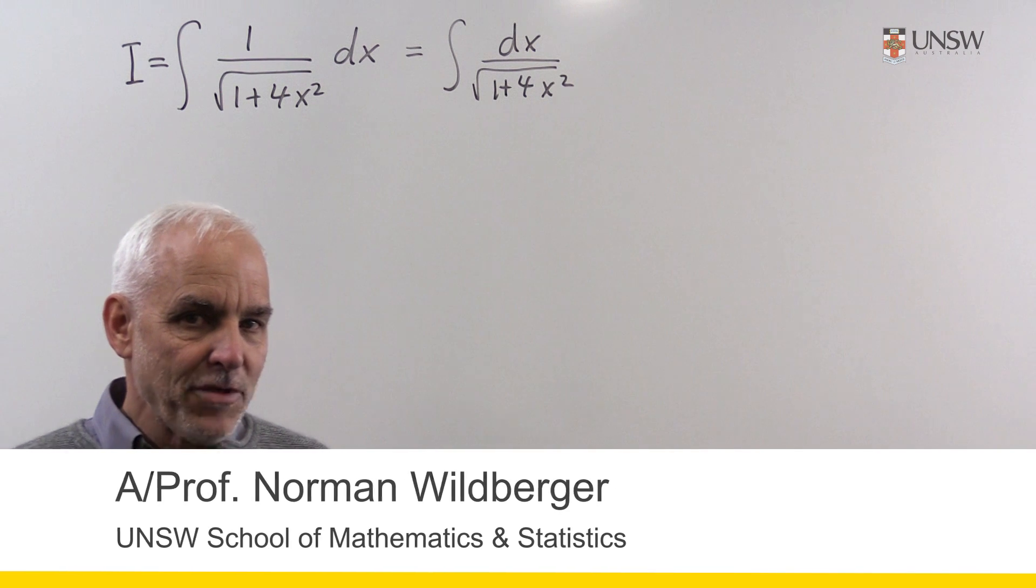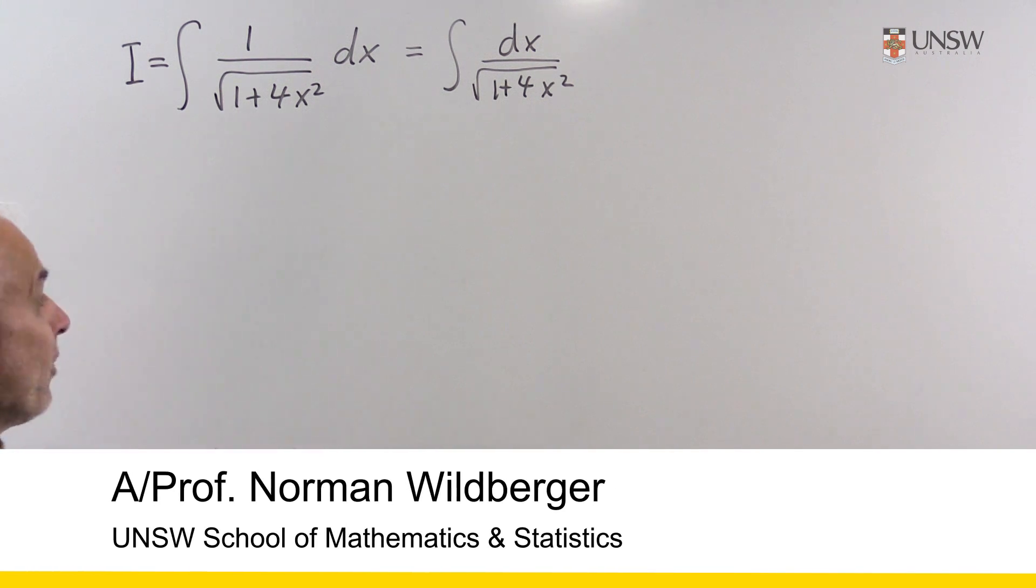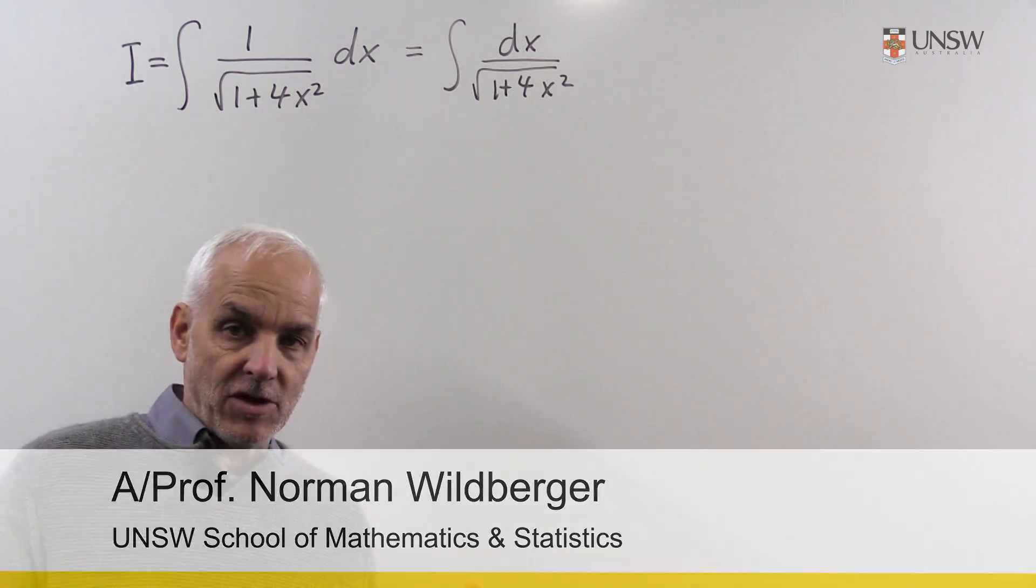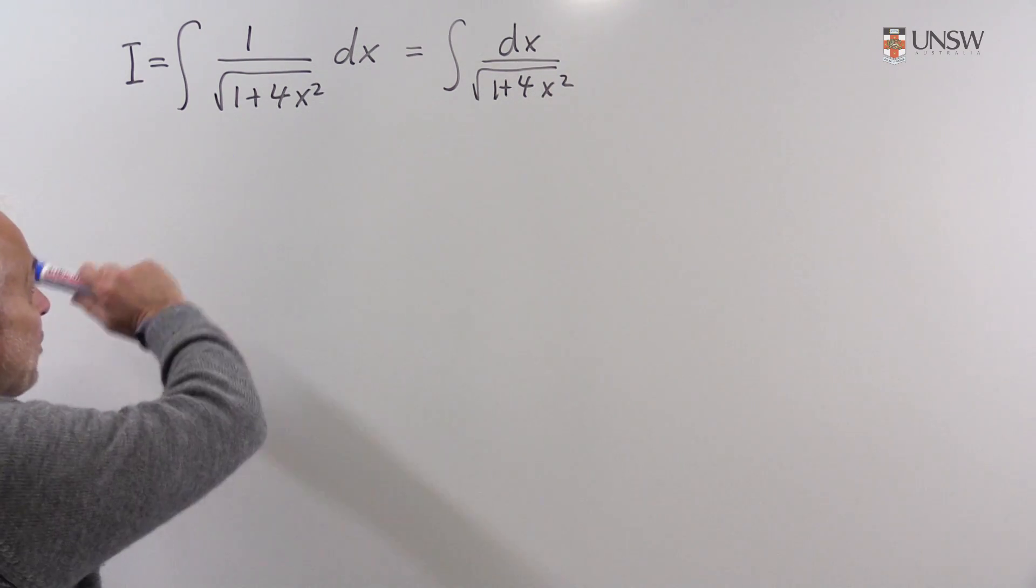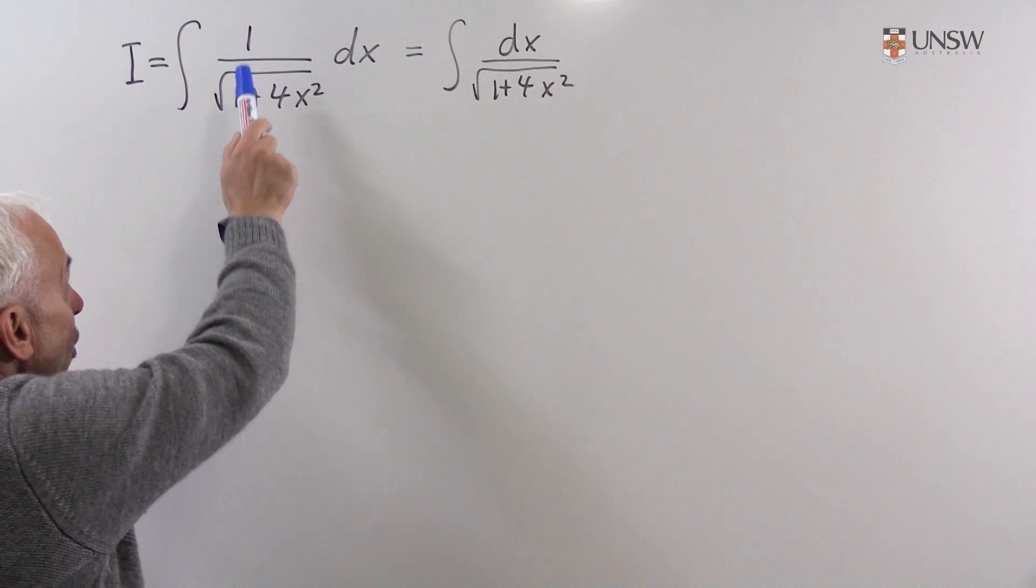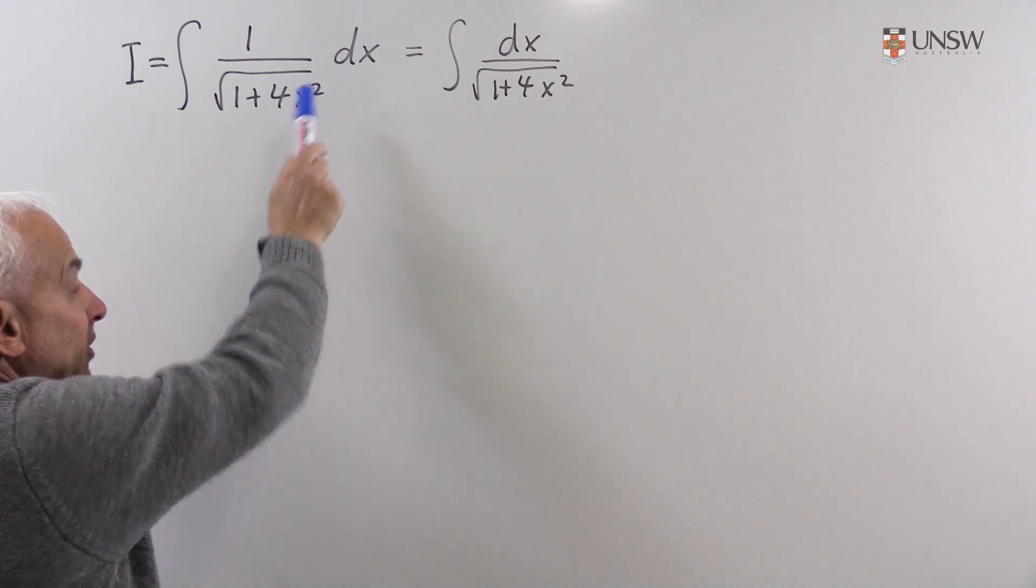In this problem we're going to look at a rather interesting integral related to the hyperbolic functions and the inverse hyperbolic functions as it turns out. So the integral we're interested in is 1 over square root of 1 plus 4x squared dx.